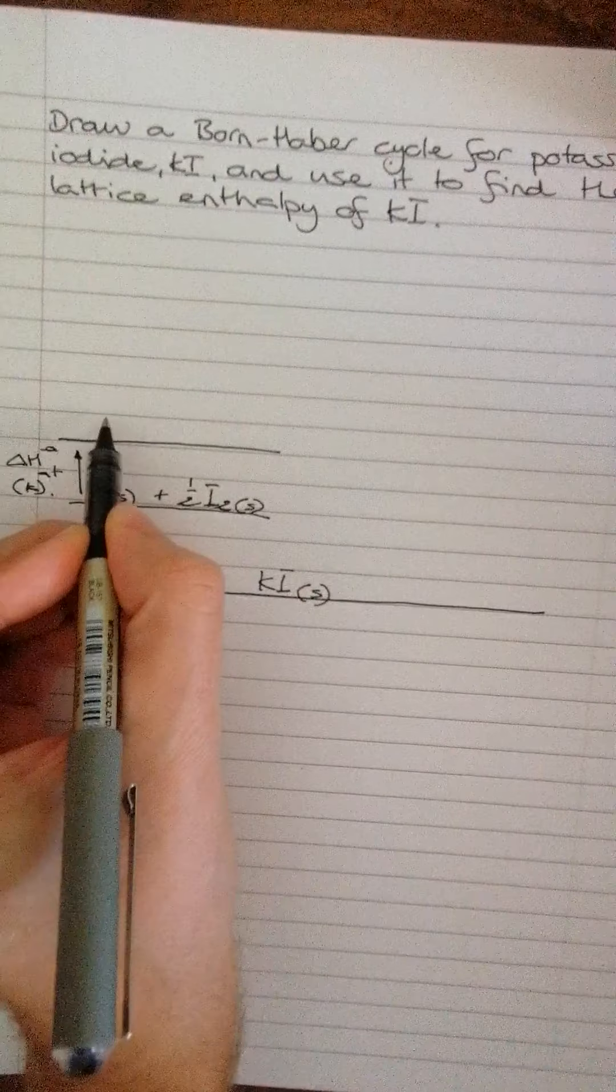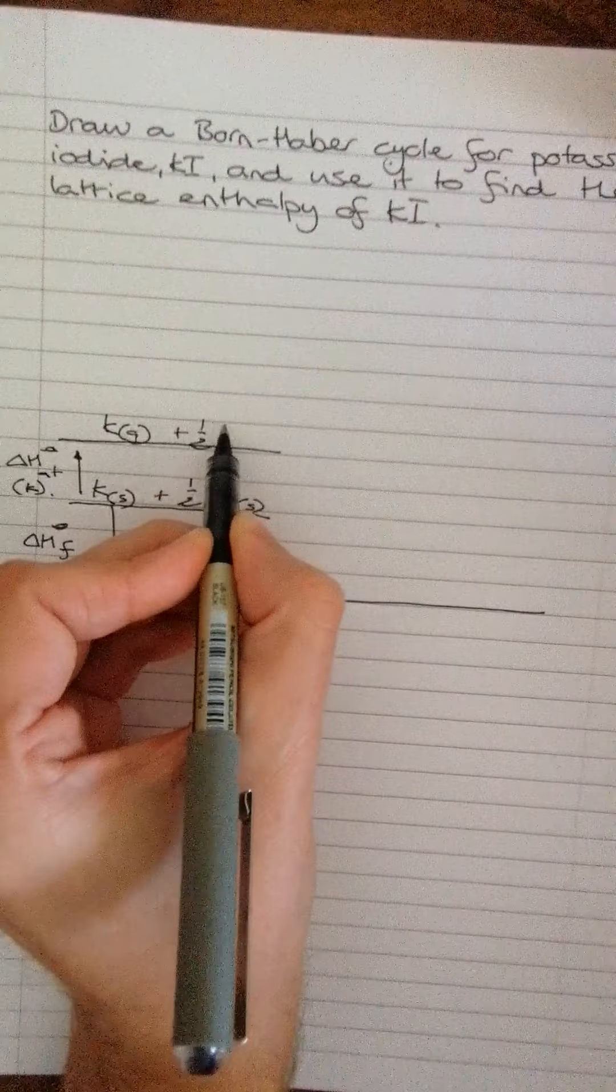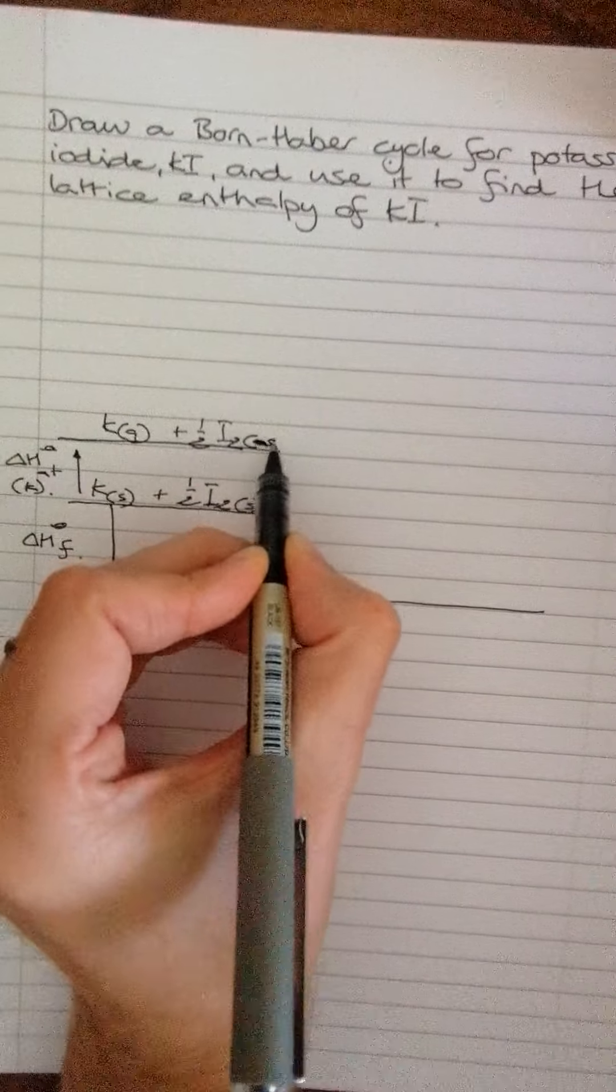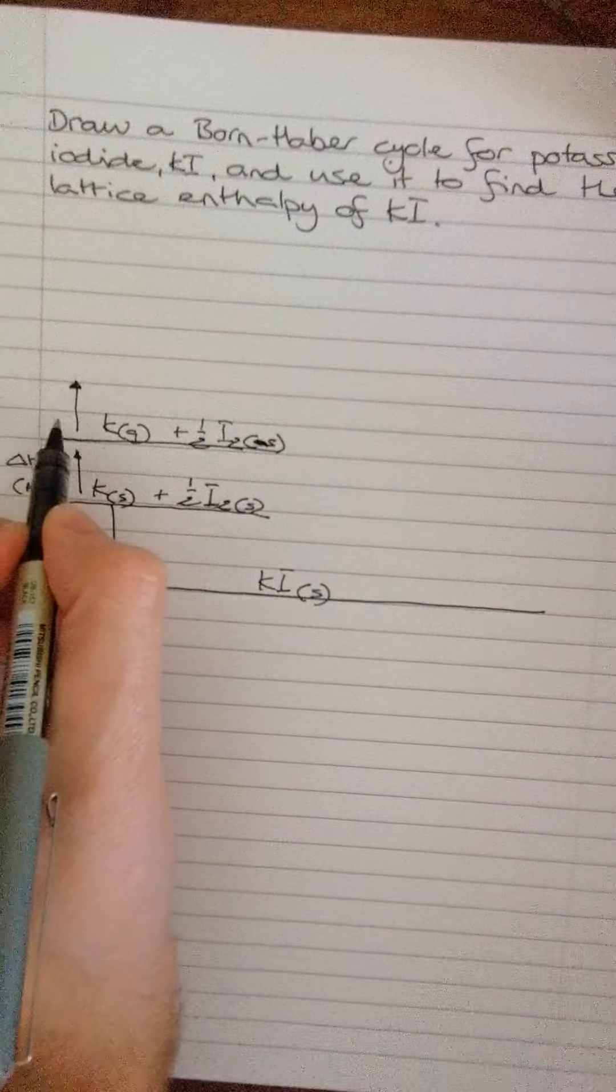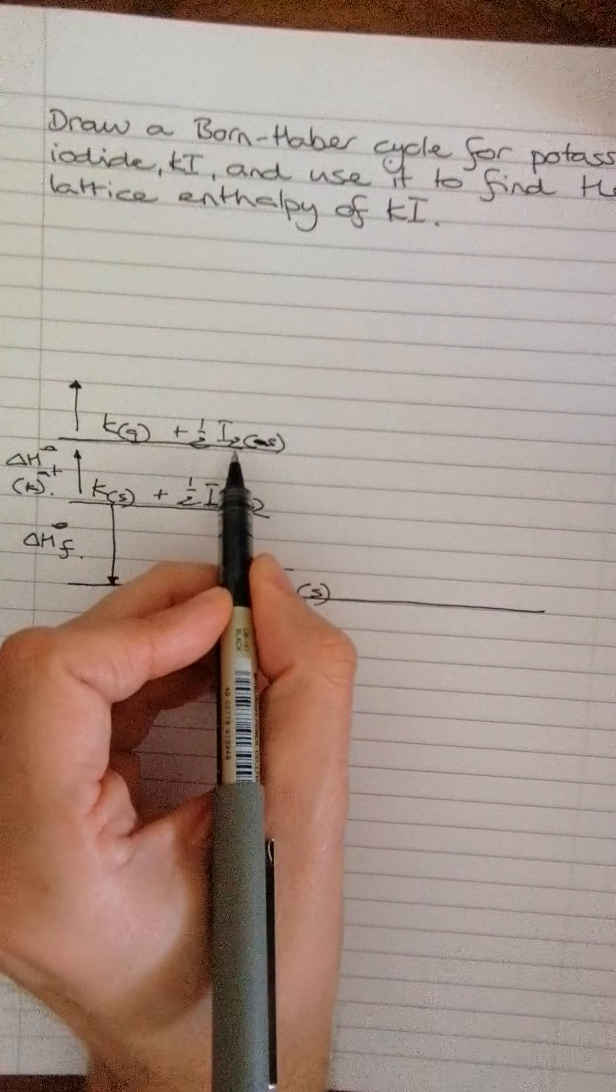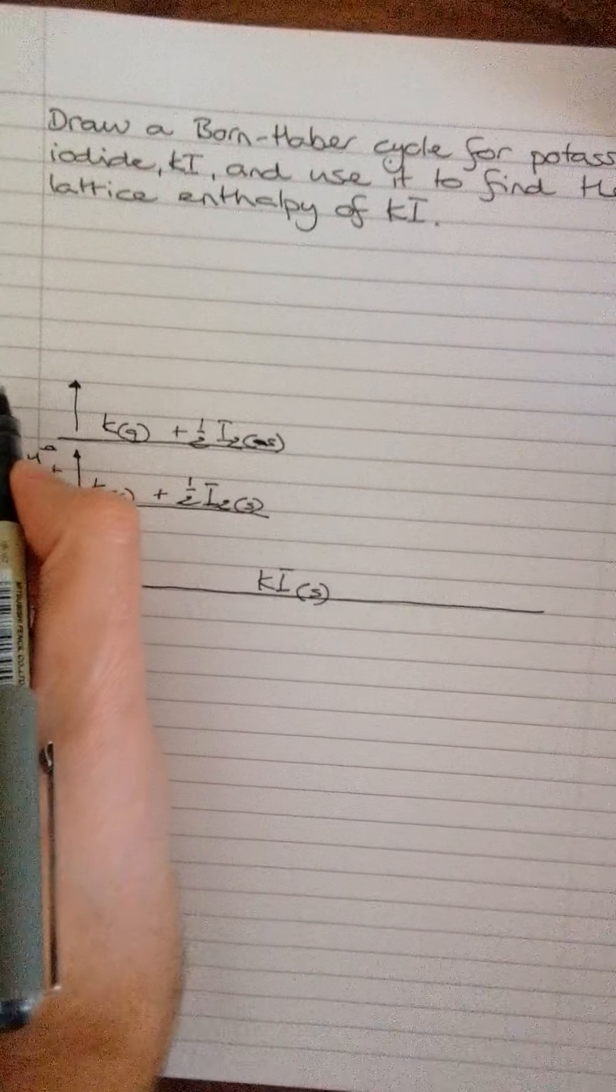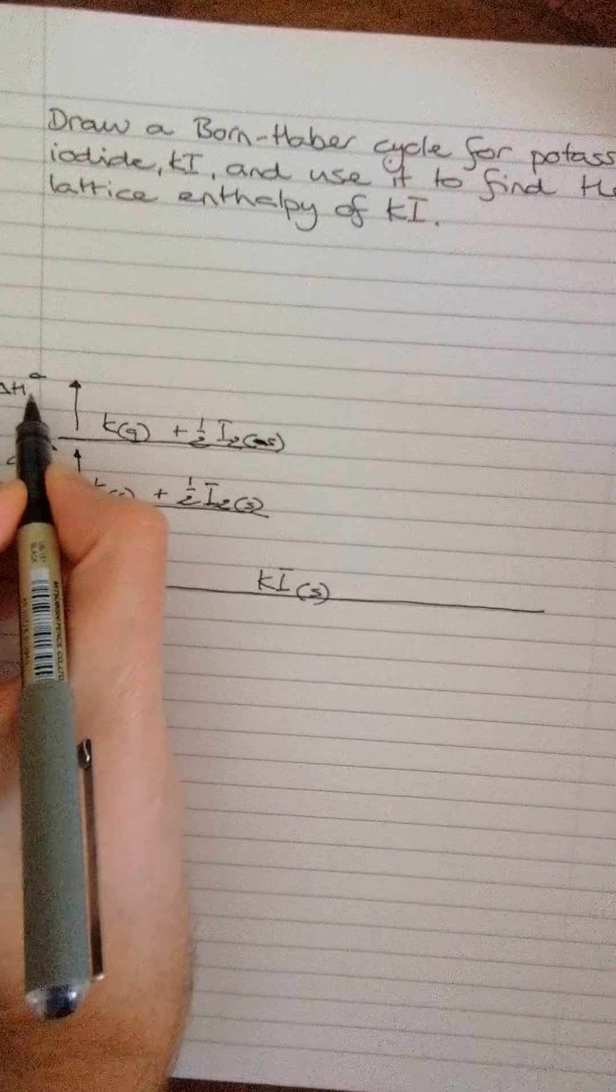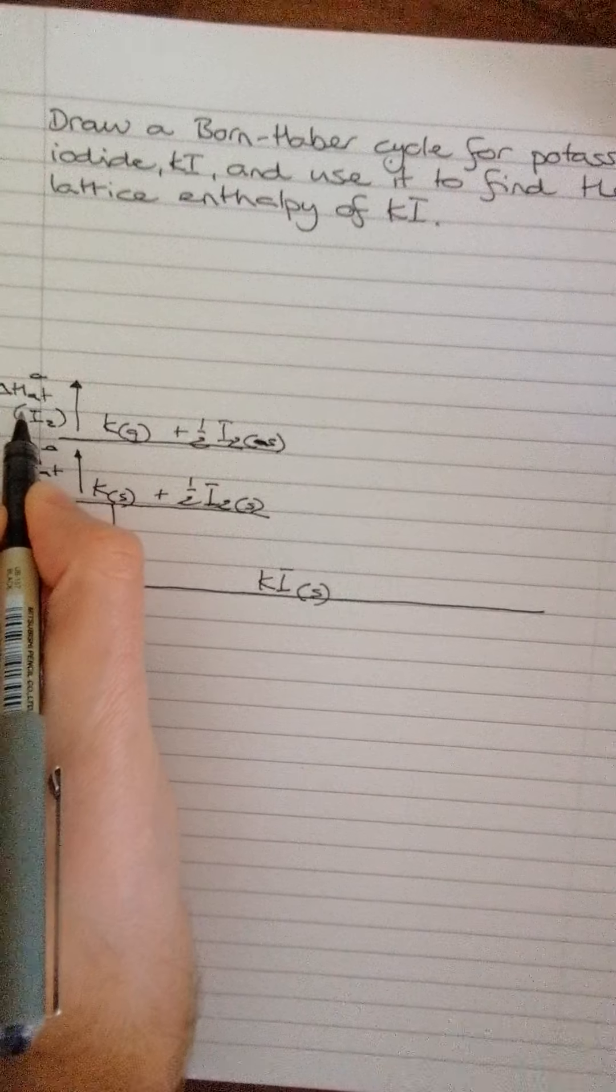So that's going to take it to K gas plus a half I2, still solid. Okay, then next we're going to take the I2 and we're going to atomize that. So we're going to turn it not just from iodine molecules into iodine atoms but from a solid into a gas. So that's delta H standard atomization for I2.